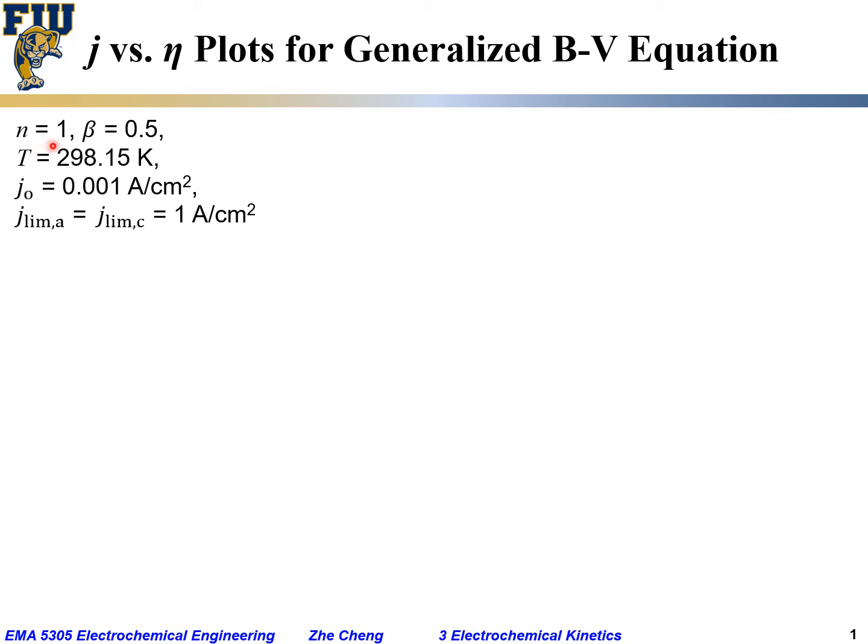n, the number of electrons transferred, let's assume to be 1. Beta, the half-cell reaction symmetry factor, let's assume to be 0.5. Temperature, assume it to be 298.15 Kelvin or 25 degrees C.